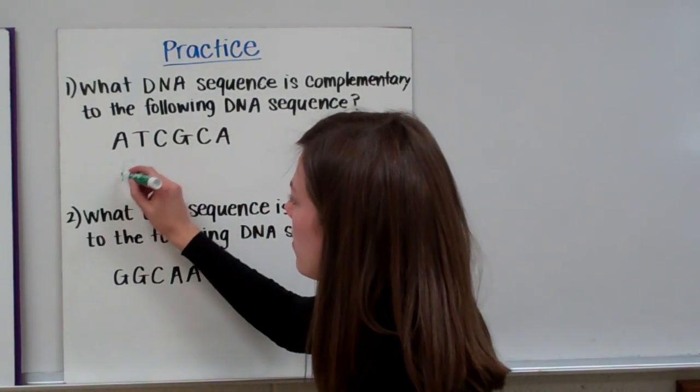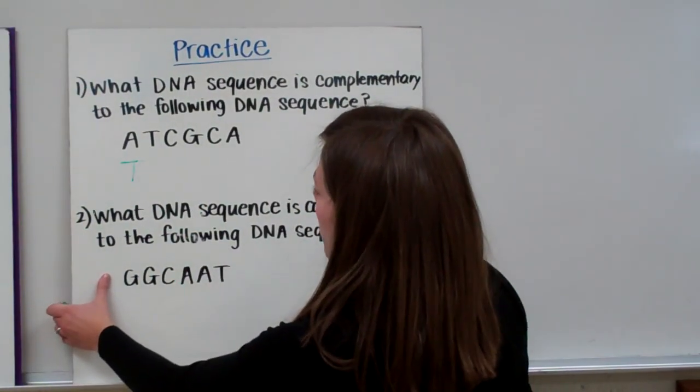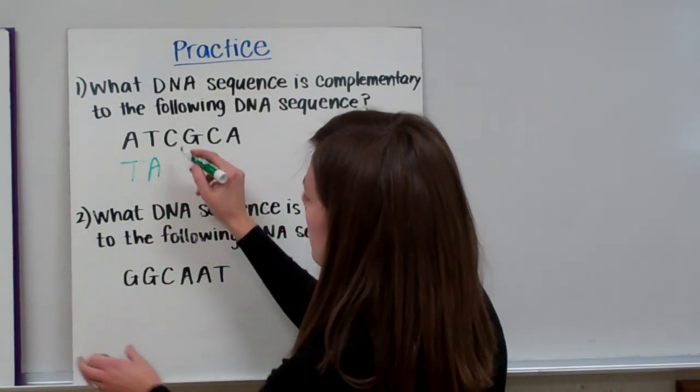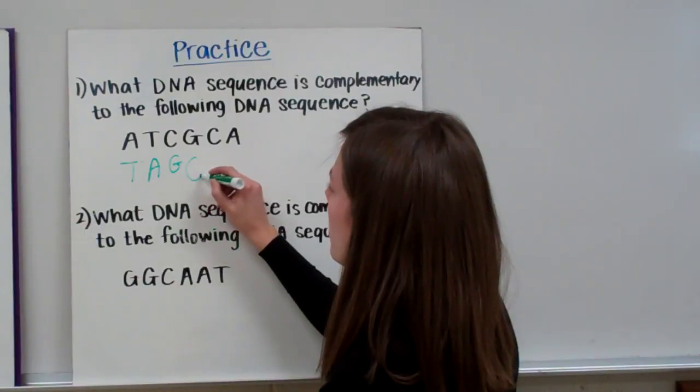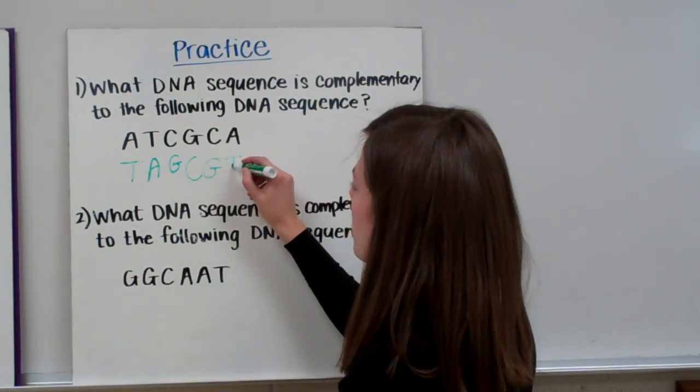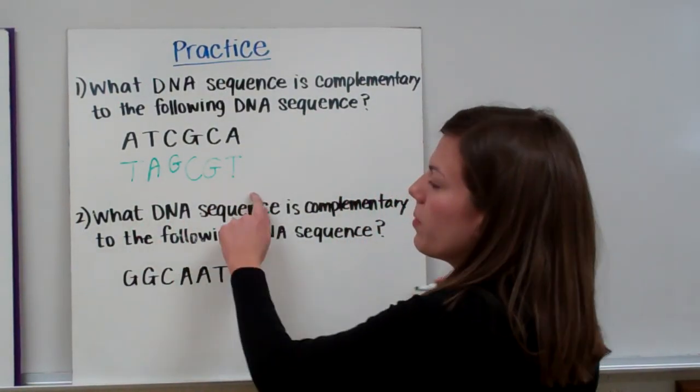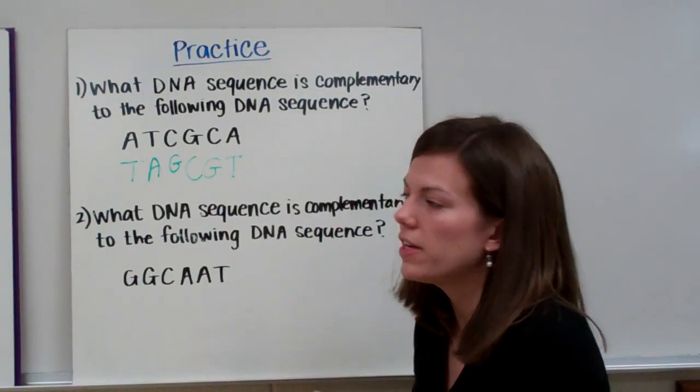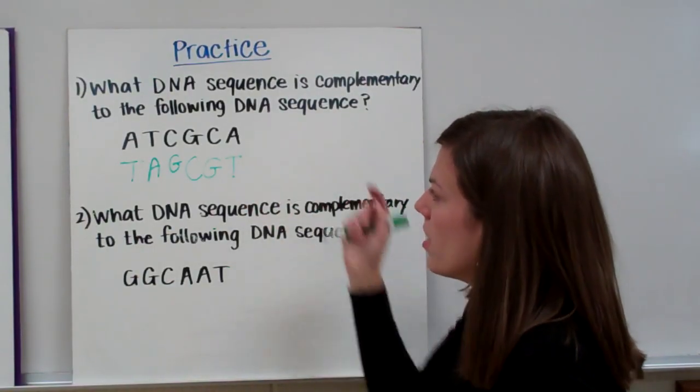A binds with T, T binds with A, C binds with G, G binds with C, C binds with G, and A binds with T. And there you go. So this green portion would be your complementary strand of DNA, or the DNA strand that's complementary to the one they gave you.